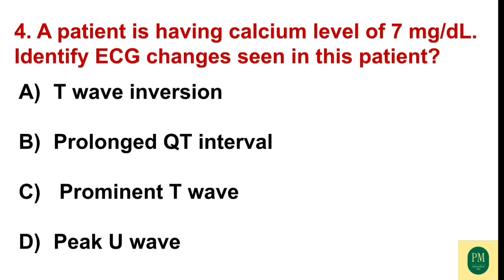A patient has a calcium level of 7 mg/dL. Identify ECG changes seen in the patient. Option A: T wave inversion. Option B: prolonged QT interval. Option C: prominent T wave. Option D: peak U wave. The correct option is Option B — prolonged QT interval.